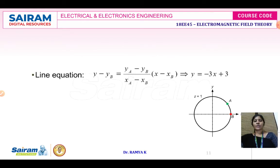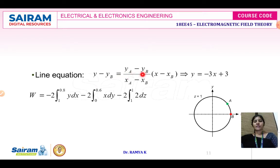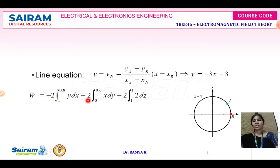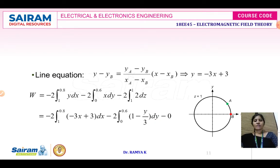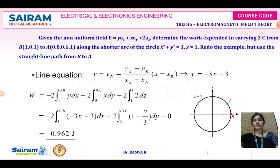Next, by using a line segment equation — Y - Y2 divided by X - X2 equals Y1 - Y2 divided by X1 - X2 — when you write the straight line equation you get Y = 3X + 3. Solving the same problem using the straight line segment gives W = -0.962 Joules. So the answer is the same whether you move from the initial to the final point along the arc or through the line segment.